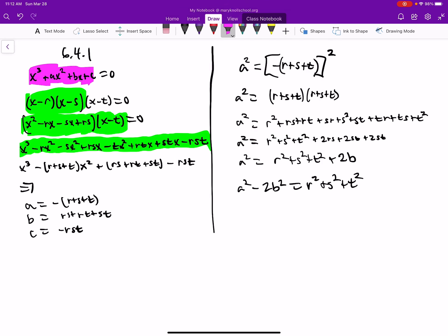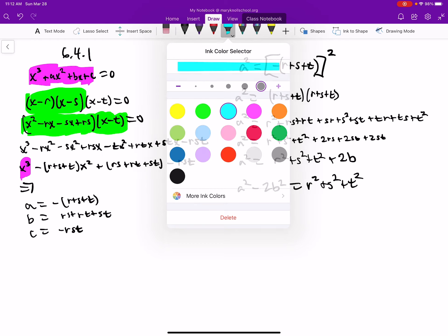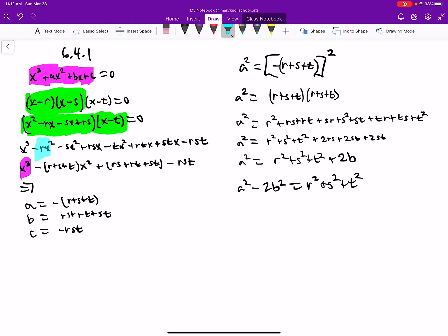So here's the x cubed, and then here's an x squared and another x squared and another x squared. So group those together.